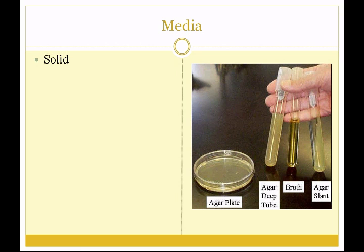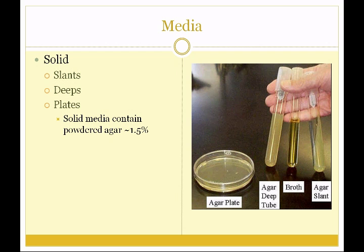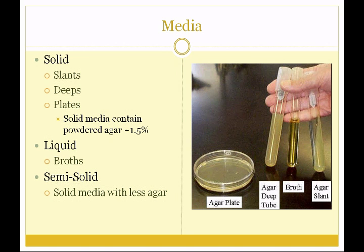A quick word on media. Media come to us in solid form, including slants, which are solidified on a slant board creating an area we can inoculate; deeps, which are solidified in the upright position and inoculated by forcing the organism down into the medium with a needle; and agar plates or petri dishes. Solid media are typically made with broths with powdered agar added at approximately 1.5% concentration. Liquid media are called broths, and semi-solid media has about 1% agar, typically used when we want to limit the amount of oxygen in the medium.